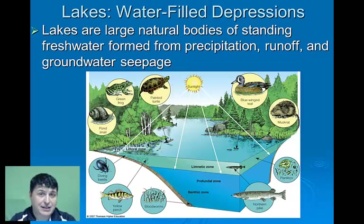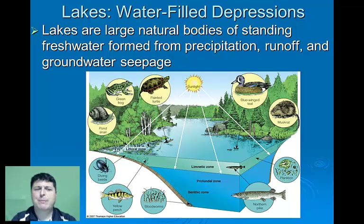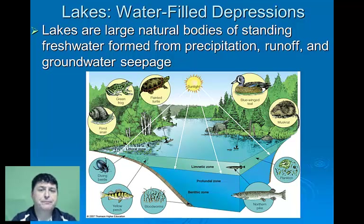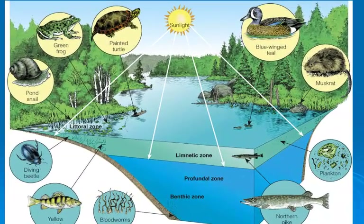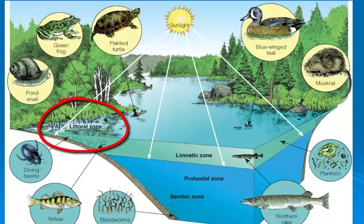The first aquatic life zone we'll look at is the lake. Lakes are large natural bodies of standing fresh water formed from precipitation, runoff, and groundwater seepage. These lakes consist of four major zones, each having their own abiotic factors which influence the kinds of life found there. Next to the shore is the littoral zone — a shallow area with plenty of rooted plants, which allow for things like snails, frogs, and turtles to exist quite nicely.